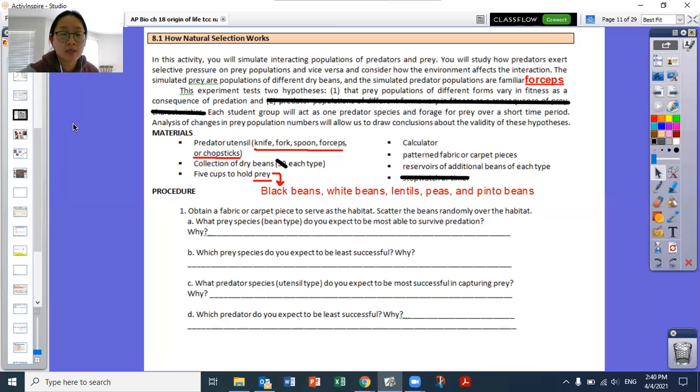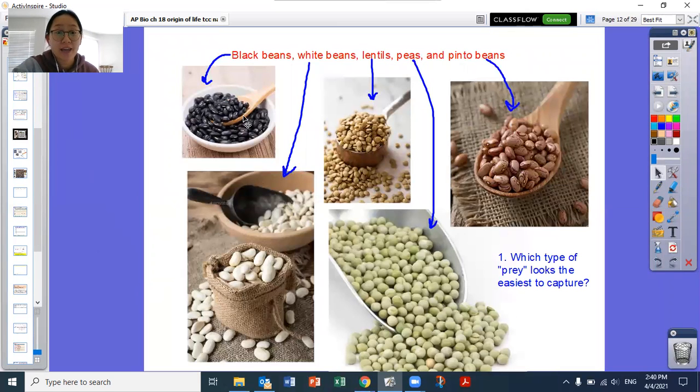So these are the prey. There's going to be black beans. There's going to be white beans, lentils which are the smallest, peas which are large, round, and green, which is an outstanding color after these ones are all neutral colors. And then lastly, pinto beans which have a little pattern on them.